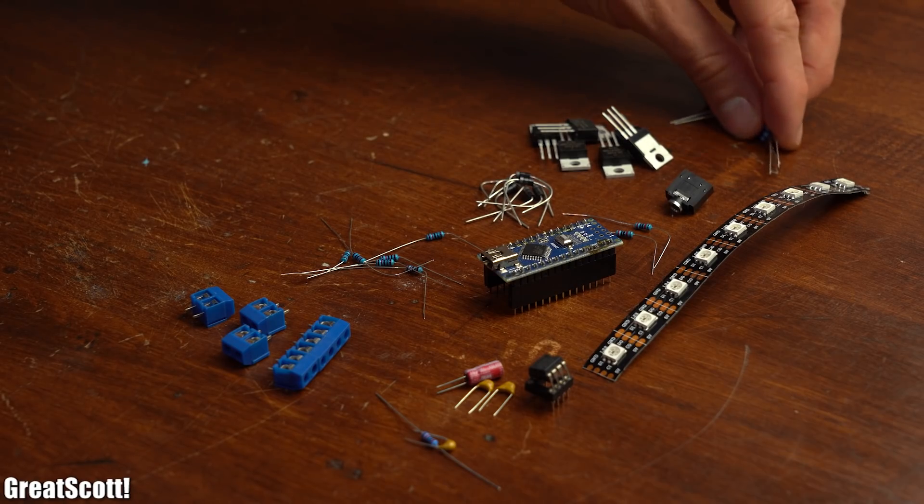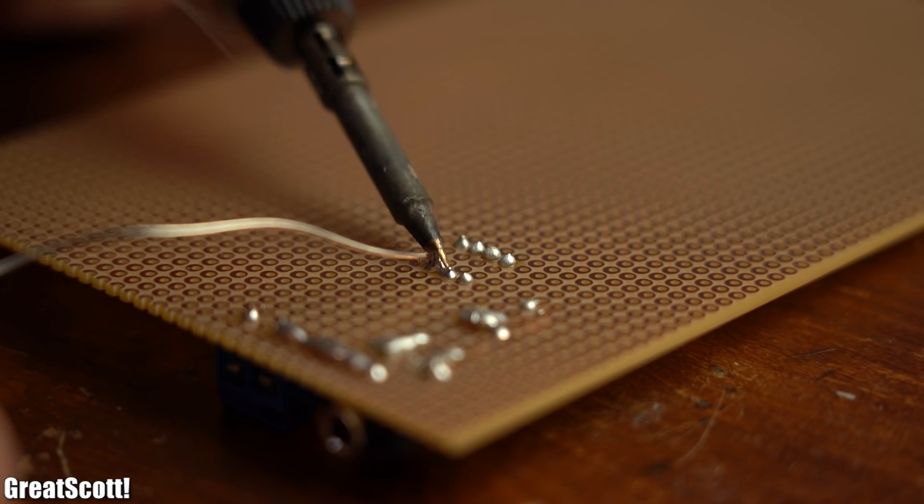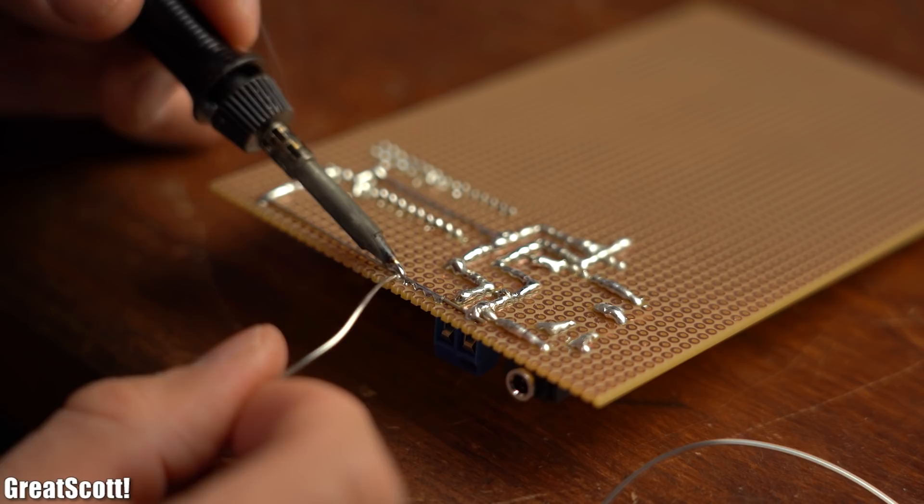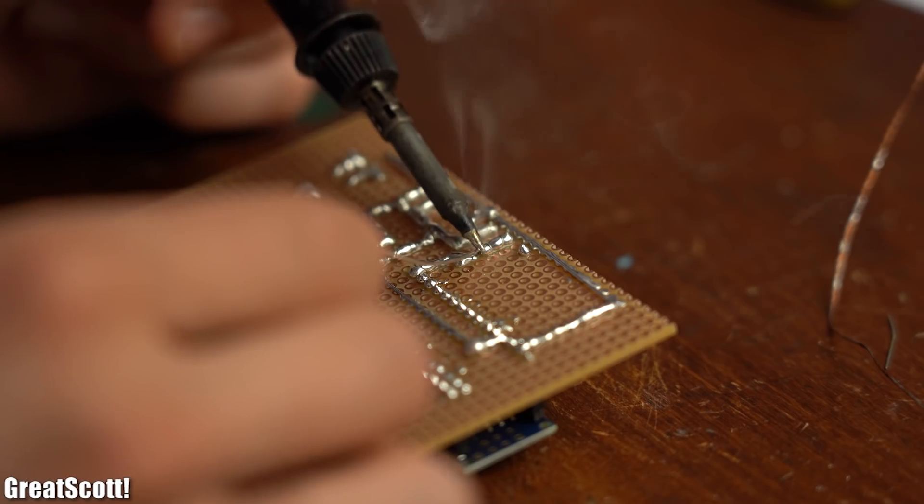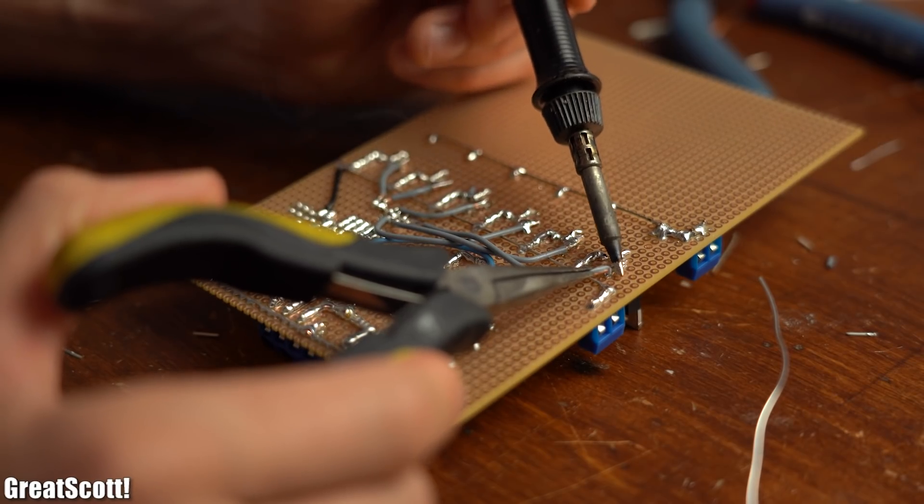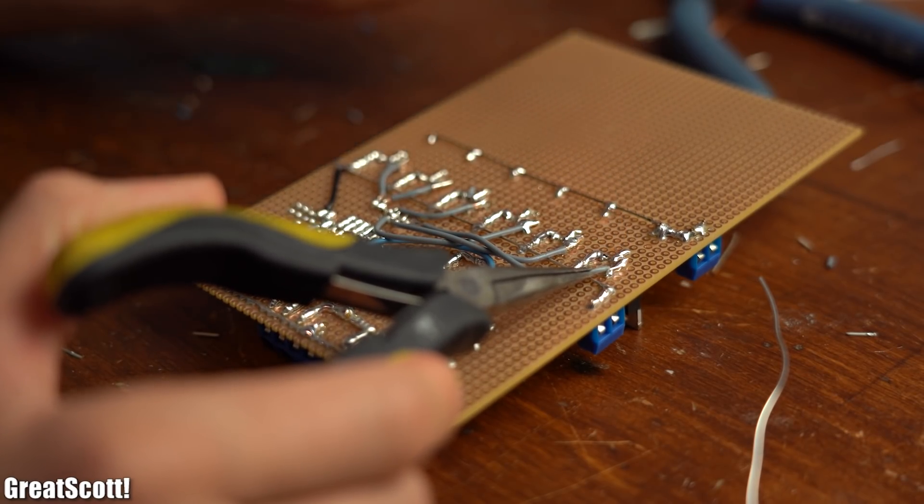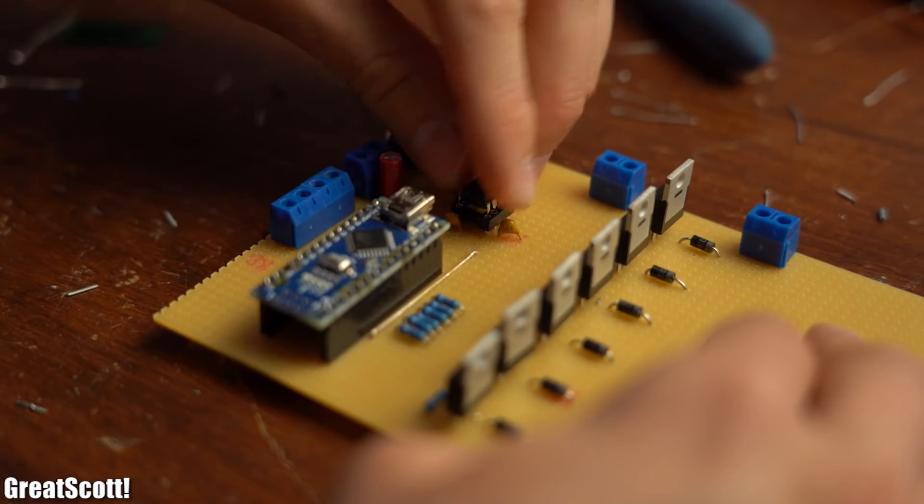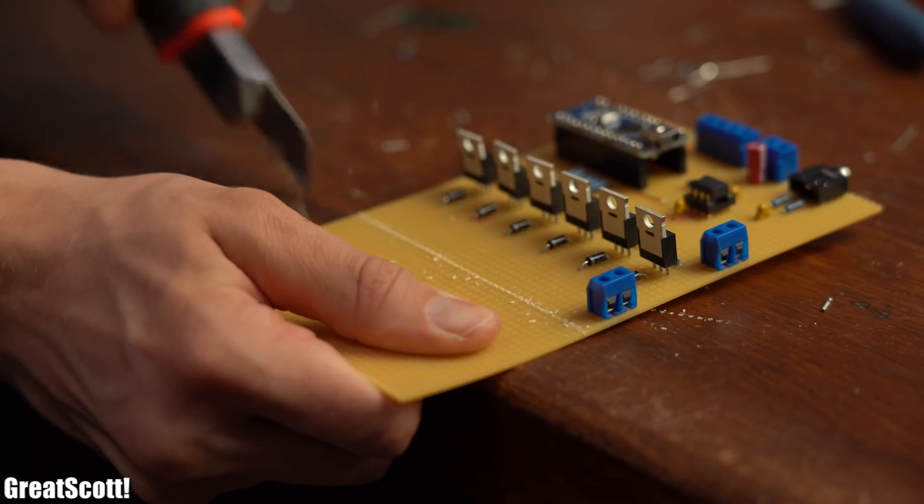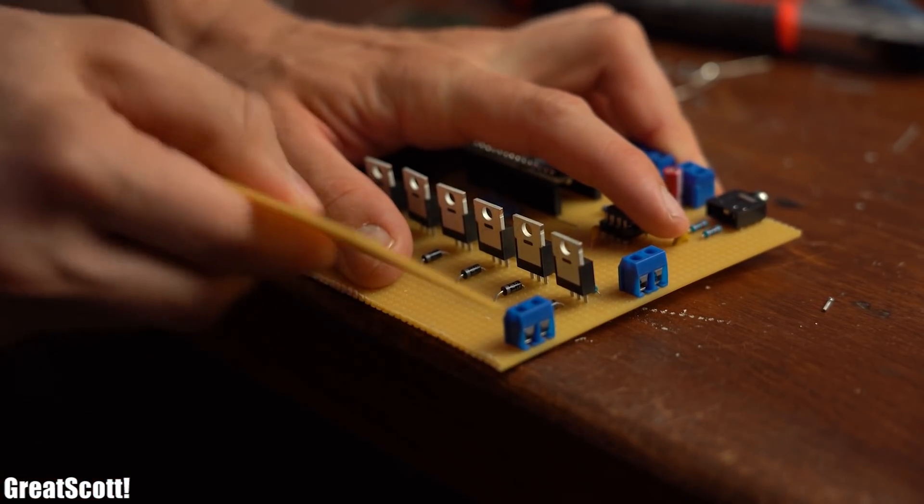So the next step was to gather all of the required components and solder them to one another according to the schematic onto a piece of perfboard. To make the connections I used solder bridges, silver copper wire and eventually even some hookup wire because the design was getting pretty busy and chaotic. And if you are interested in pictures of my finished design and more information about this project then feel free to have a look in the video description.